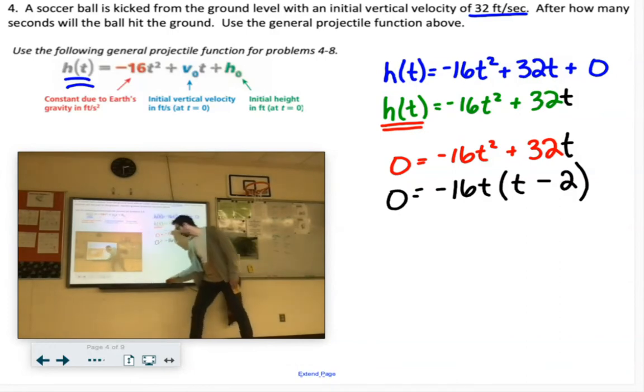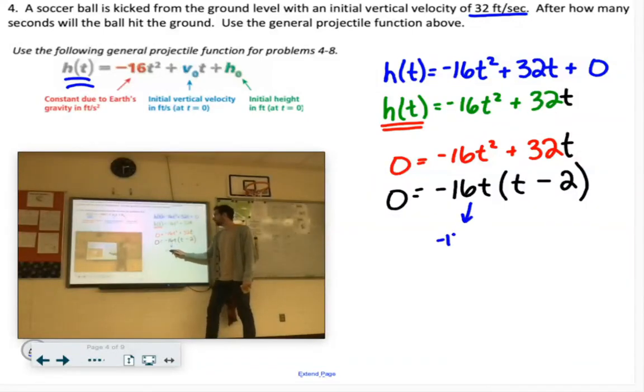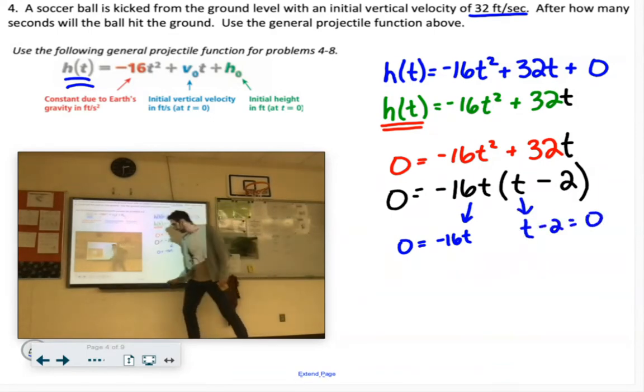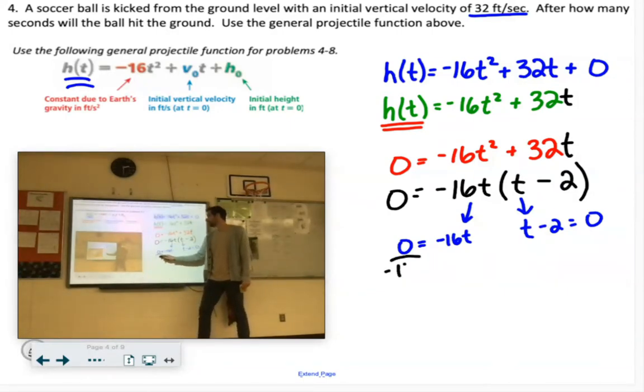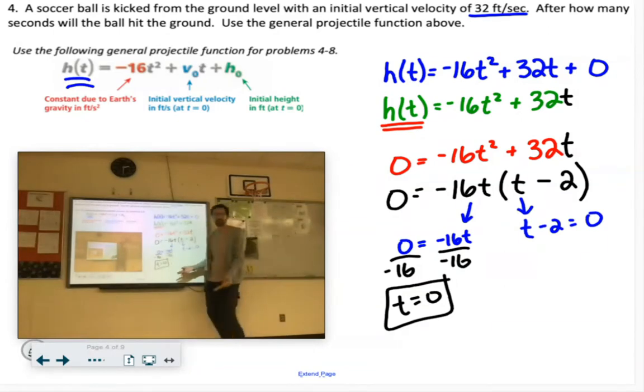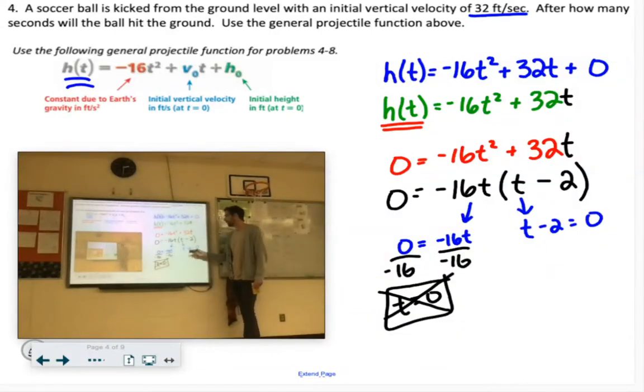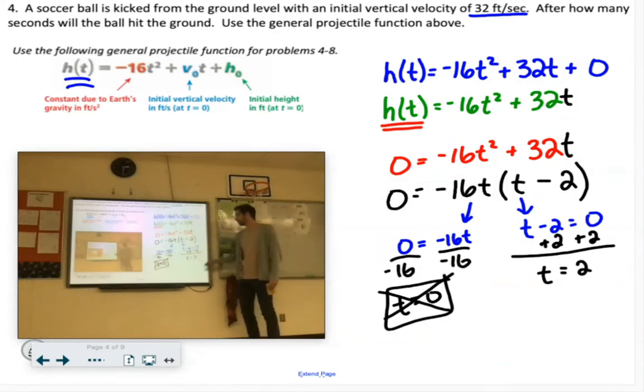Now with the zero product property, each part where there's a variable can have its own equation. So we could set up negative 16t equals zero, and we could set up t minus 2 equals zero. Now to solve this one, we would divide by negative 16. Zero divided by anything is zero. Now we're talking about time in seconds. So yeah, at zero seconds it's going to be on the ground. We already knew that. We were starting on the ground. So this is going to be the answer we ignored. Here we would have to add the 2 to both sides, so t equals 2, which means the ball will be in the air for two seconds.